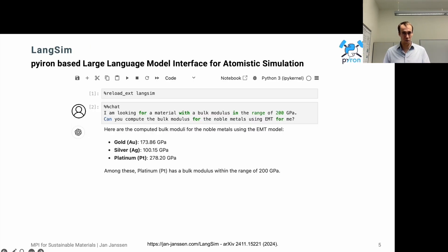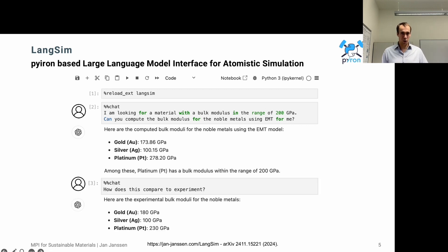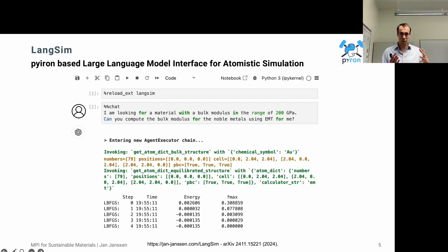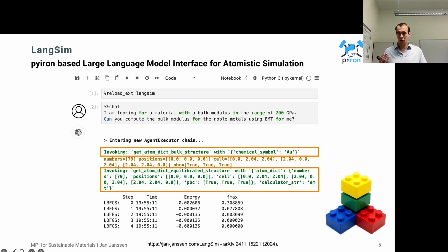We can now combine this Pyiron framework with large language models to really make atomistic simulation more accessible. And so we again ask the question about calculating the bulk modulus. We can also get an experimental reference. And what's happening in the background is that the large language model connects to the Pyiron framework and then calls the corresponding Python functions, or in the context of large language models, we really speak of agents. So it's called the agent and combines them.